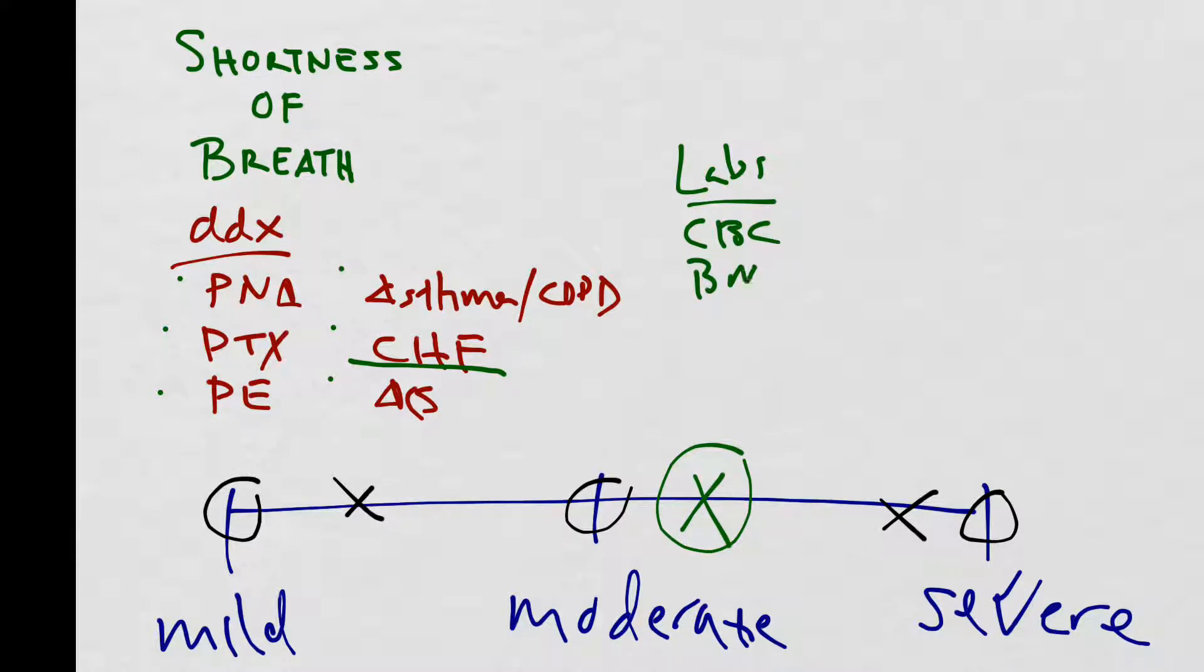A basic metabolic panel to make sure that we're not missing an electrolyte abnormality. Potentially, your patient could be in DKA, and that's why they're having tachypnea. An EKG and troponin to make sure your patient isn't having acute myocardial infarction. A BNP if you're worried that your patient is volume overloaded from heart failure. And finally, plus or minus a D-dimer, depending on what your patient's Wells score or PERC score is and what your degree of suspicion is for pulmonary embolism.